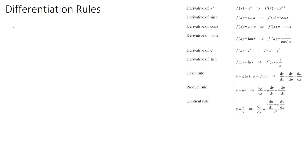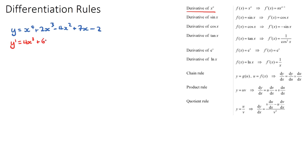We will get given a function — either y or f(x). So if we have y equals x to the power of 4 plus 2x cubed minus 4x squared plus 7x minus 2, this is a polynomial function. Since all terms are added or subtracted, we can derive using the power rule: bring the power down and subtract 1 from the power. So y' = 4x cubed + 6x squared minus 8x plus 7, and a constant derives to 0.